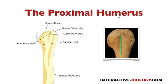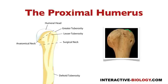The bicipital groove is named because the tendon of the long head of the biceps comes through here, and we'll talk about that in a later video. Another thing to point out about the greater tubercle is that we have three facets: the superior facet, the middle facet, and the inferior facet of the greater tubercle. That's going to come in handy when we talk about some of the muscles that connect with the humerus.